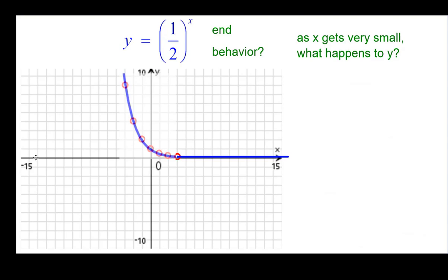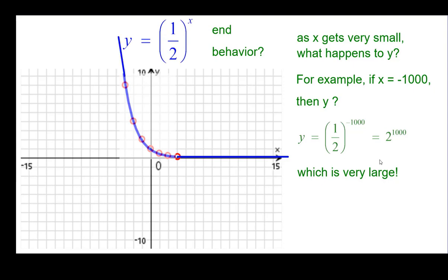As x is very small, meaning negative but large in size out this direction, what happens to y? For example, if x is negative a thousand, what's happening to y? One half to the negative thousandth. Again, that would make it two to the positive one thousand, and that would be a very large positive number. So our graph would take off over here.